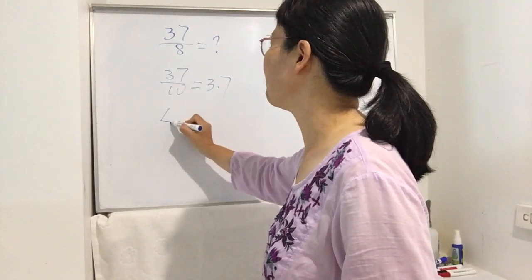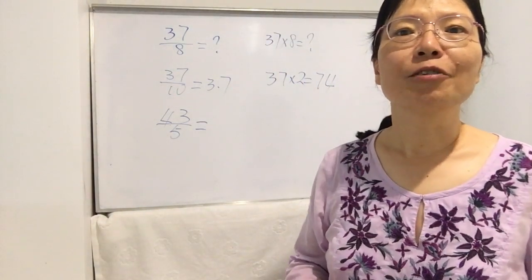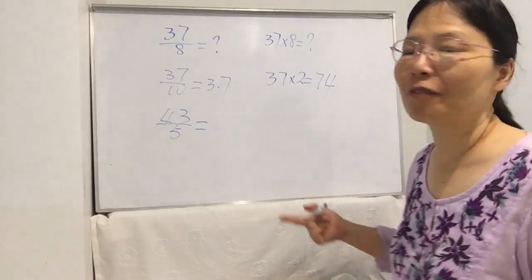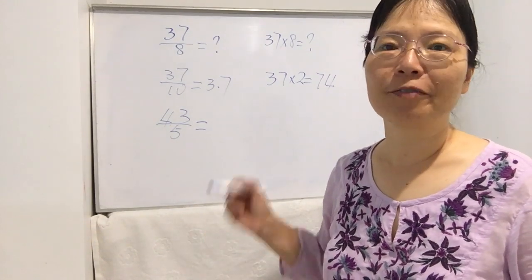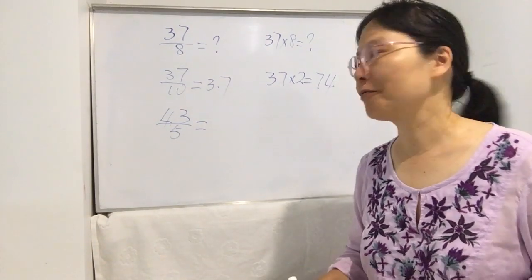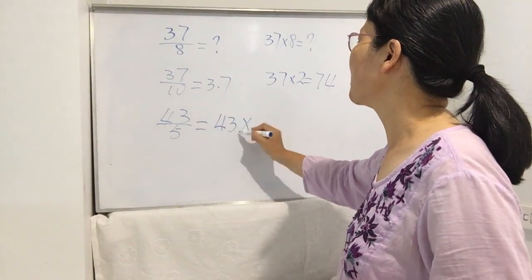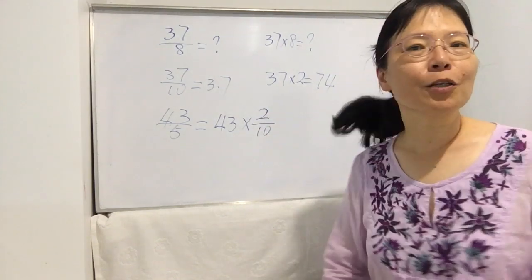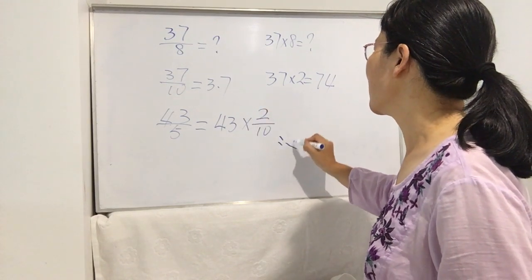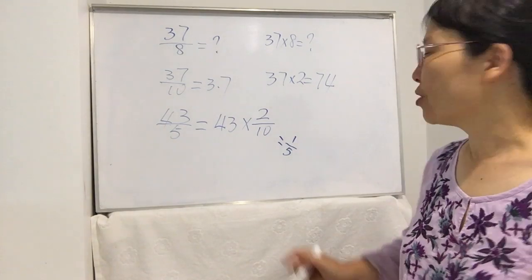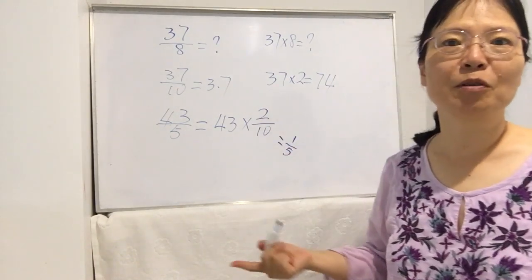Now I ask you to do 43 divided by 5. After you finish watching this video and learn this special skill, you will be very fast at dividing by 5. Actually, we can do 43 times 2 divided by 10. Why? Because 2 divided by 10 actually equals 1 divided by 5, so it is the same as dividing by 5. We do it this way because times 2 divided by 10 is the easiest to work out.